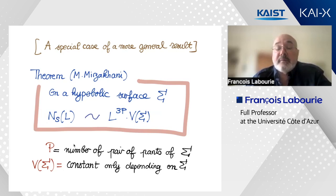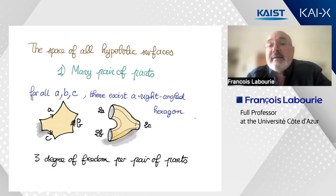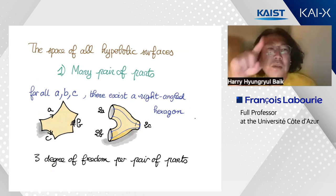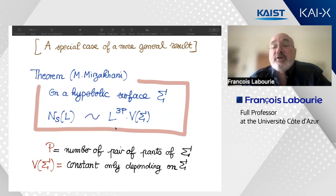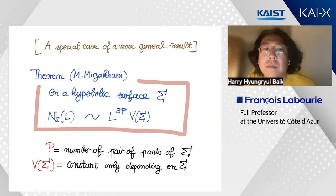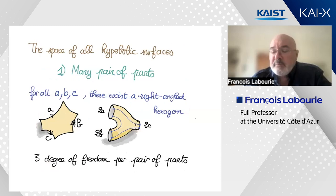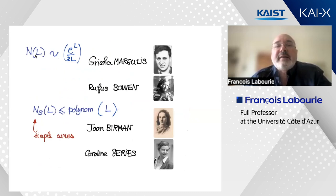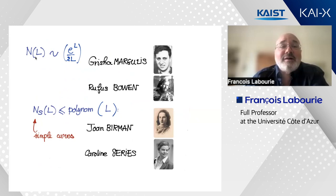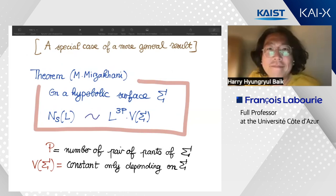The tilde notation means the ratio of the two quantities goes to one as L goes to infinity — it's the standard asymptotic equivalence. I should clarify: this is always as L goes to infinity. Thank you for making me clarify that.